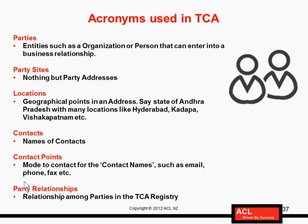Party relationships are the relationships among parties registered in the Trading Community Architecture registry. You can define parent-child relationships — for instance, GE is a corporate parent organization, and GE Plastics is one of its subsidiaries. You can also define different subsidiaries and employees of the parent organization as person-type parties. These are the common acronyms used in TCA, though there are many more to cover as we go along.